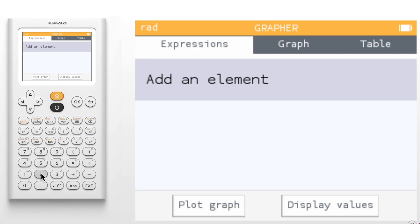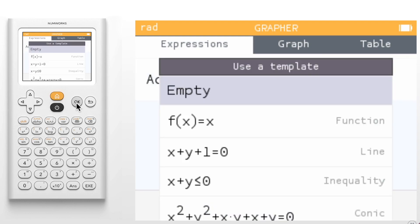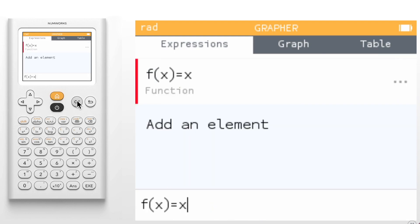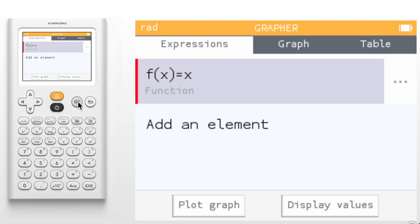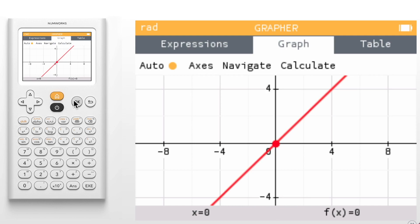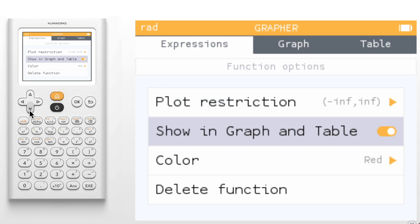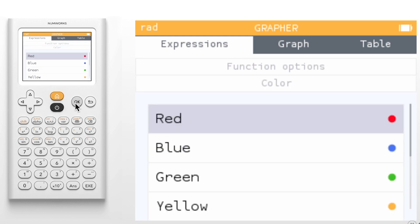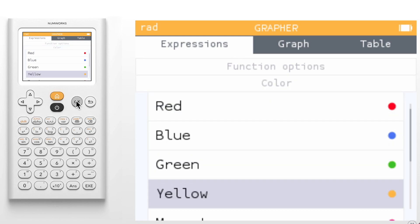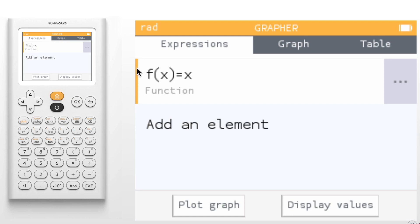When we add a function, the color is automatically assigned, and the colors on the expression tab will match the color of the graph on the graph tab. We can change the color of the graph back on that expressions tab. If we navigate to the three dots to the right of the expression and click OK, we can select color and choose the color we'd like. The expressions tab and graph will now display the selected color.